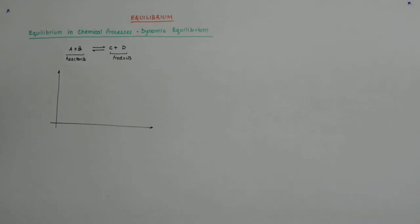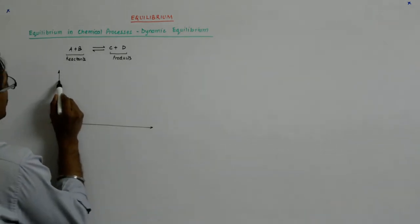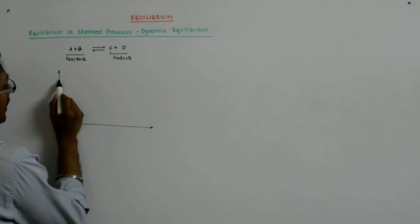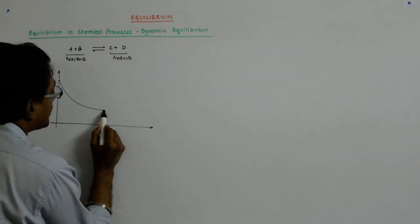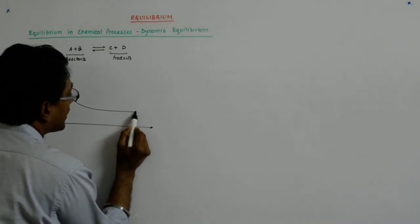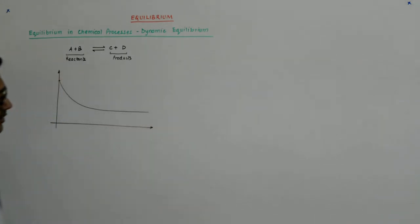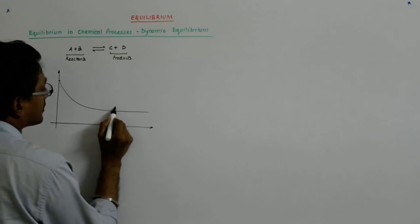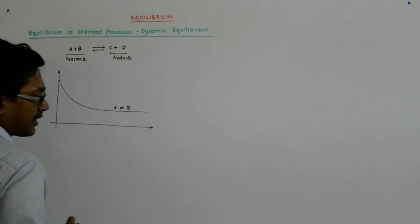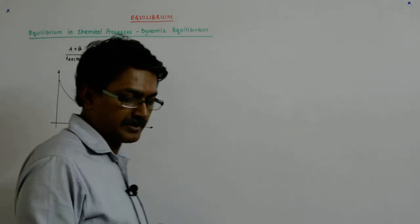You'll find a curve that might look something like this. So here I either track A or B, so it'll start going down and then it'll become constant at some point. It'll become a constant.